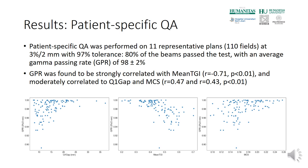To investigate potential correlations between the complexity metrics and the patient-specific quality assurance results, we performed patient-specific QA on 11 representative plans, i.e. 110 fields, at 3% 2mm with 97% tolerance. We found an average gamma passing rate of 98 ± 2% with 80% of beams passing the tests. Furthermore, we found that the gamma passing rate was strongly or moderately correlated to the analyzed complexity metrics.